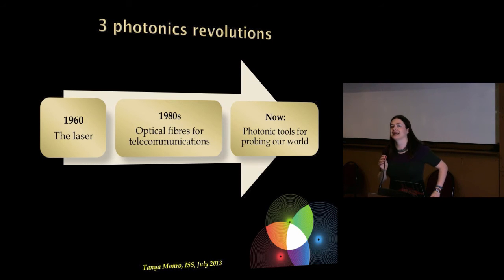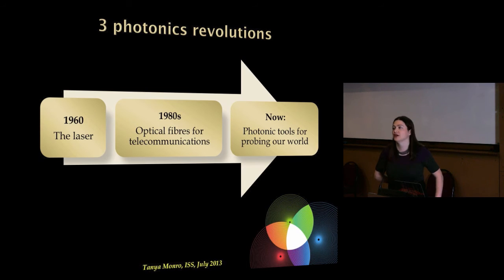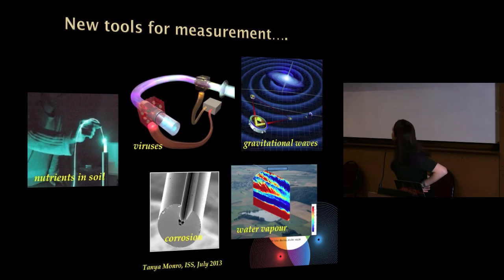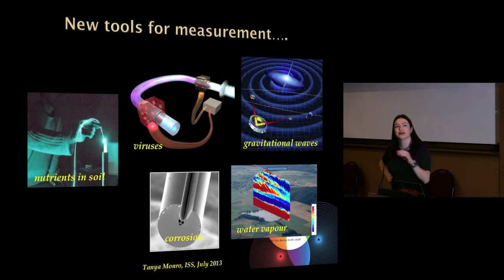Then in the 80s, the next revolution came in being able to make silica glass transparent enough to send photons over hundreds of kilometres without needing to be amplified. That underpins our telecommunication systems. I think we're right now at the cusp of a third revolution, where we can use the photon to tell us everything from how a single cell responds to changes in its environment to making better decisions in health care and mineral exploration.